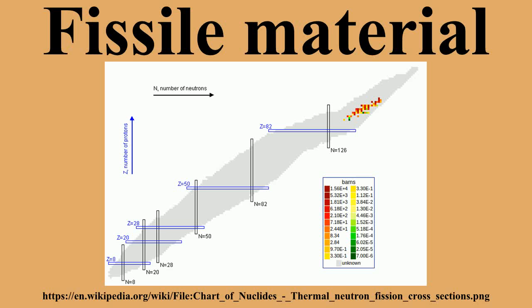Fissile nuclides in nuclear fuels include uranium-235, which occurs in natural uranium and enriched uranium; plutonium-239, bred from uranium-238 by neutron capture; plutonium-241, bred from plutonium-240 by neutron capture (the Pu-240 comes from Pu-239 by the same process); and uranium-233, bred from thorium-232 by neutron capture.